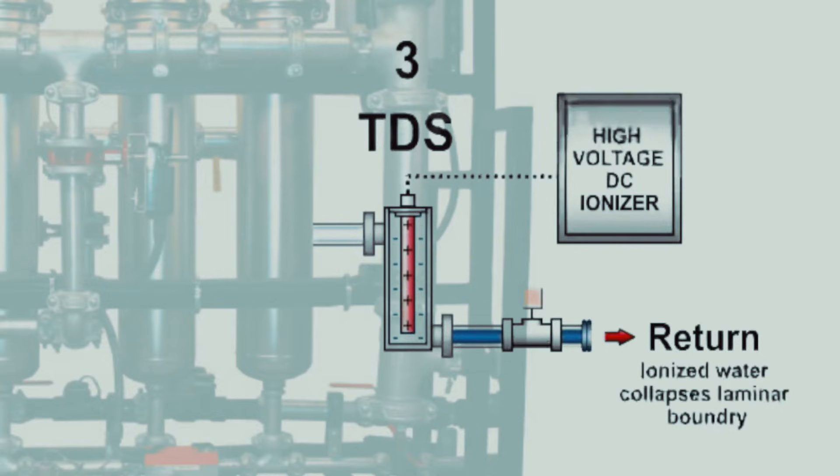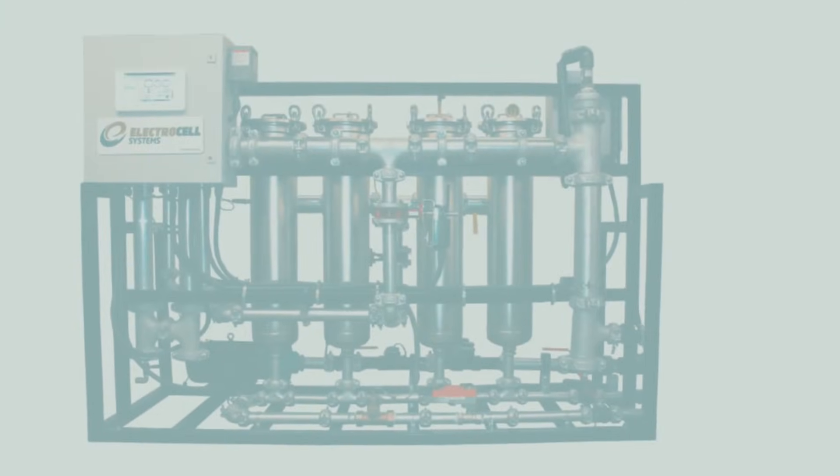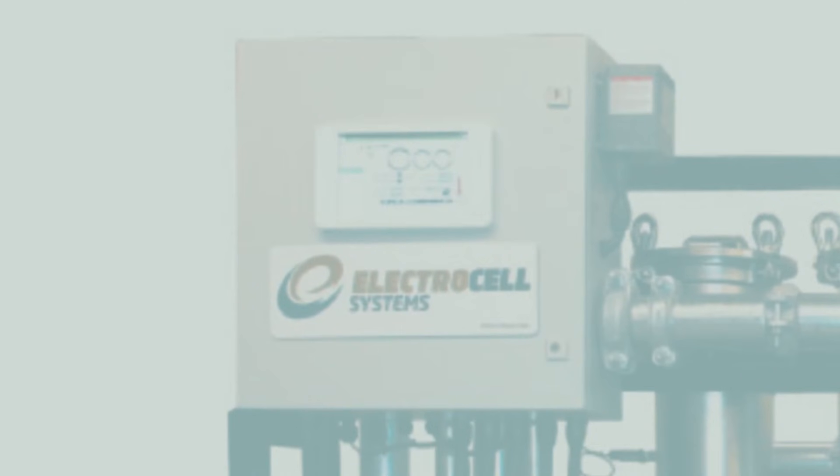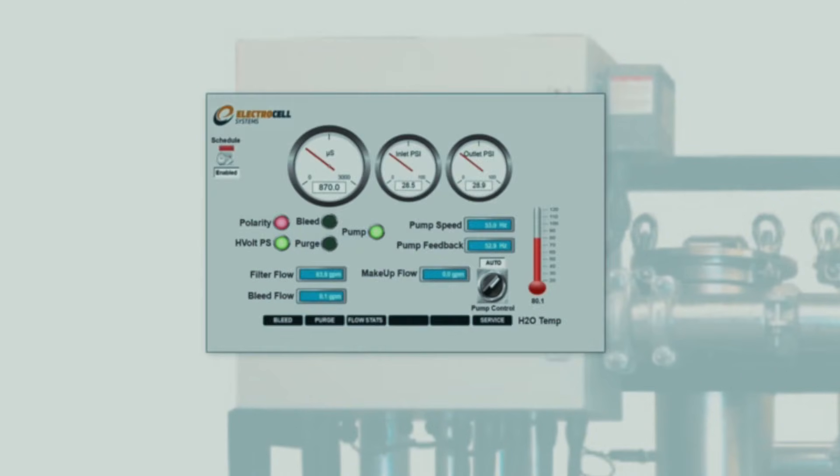Drag and laminar boundaries are held at a minimum throughout the loop, thereby preventing and removing scale and reducing the need for chiller tube punching. The Electrocell system's touchscreen monitor is user-friendly and fully automated.